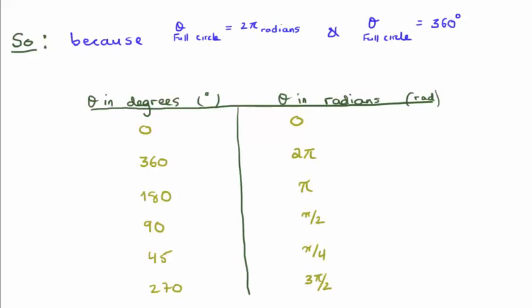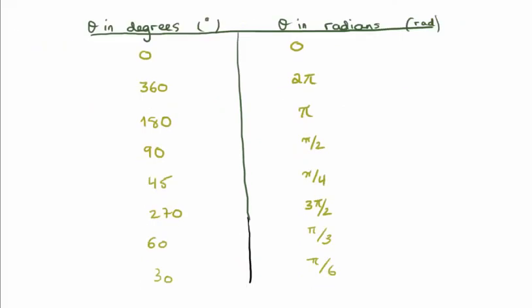Because there are two pi radians in one full circle and 360 degrees in one full circle, we can see the relationship between angles in degrees and radians. There are some key conversions you should know immediately: two pi radians is 360 degrees, pi radians is 180 degrees, and pi over two is 90 degrees. The smaller angles like 45 degrees, 270 degrees, 60 degrees, and 30 degrees you don't necessarily need to know off the top of your head, but after a while you will remember them.